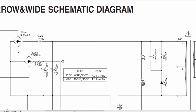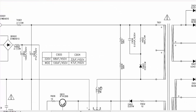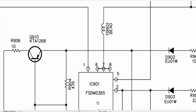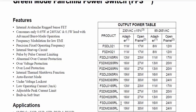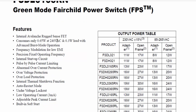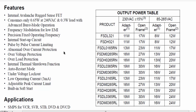The output of BD901 passes through power resistor TH901 to charge capacitor C904, and through another resistor to charge C905. C904 supplies voltage to transformer T901's primary, whose second end connects to this IC — the FSDM0365.